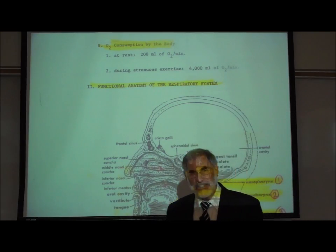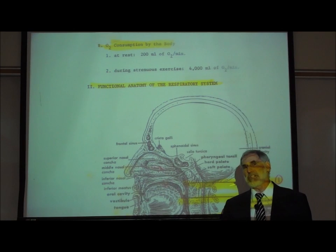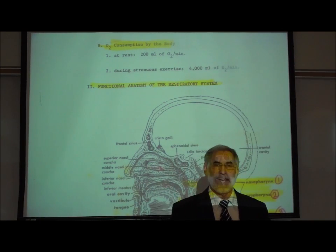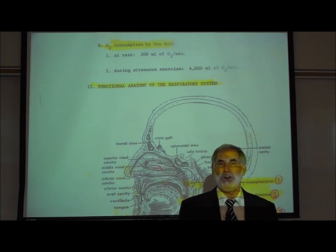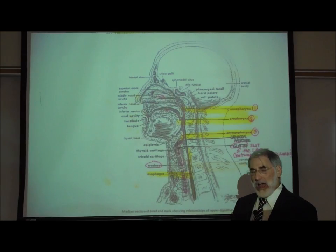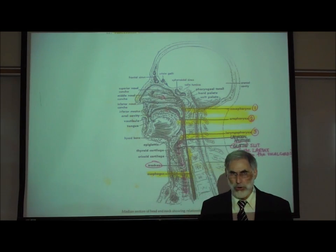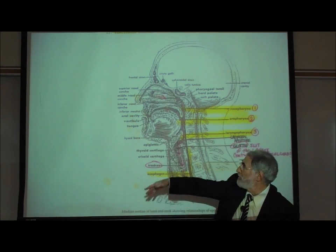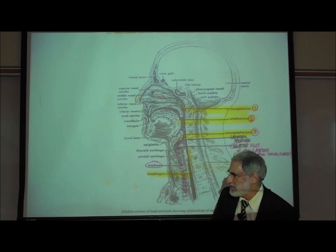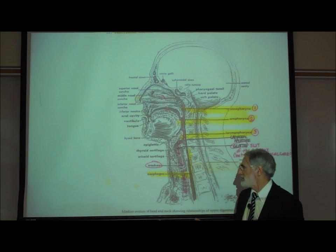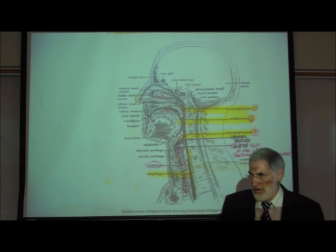Next is a review of the anatomy of the respiratory system. For a more extensive review, I'd refer you to my anatomy videos on the respiratory system. We commonly divide it into the upper respiratory system — including the nasal cavities, throat or pharynx, and larynx — and the lower respiratory system, consisting of the trachea, bronchi, bronchioles, and alveoli of the lungs.